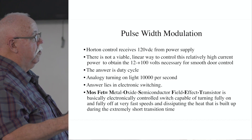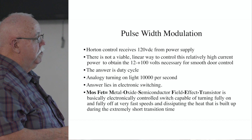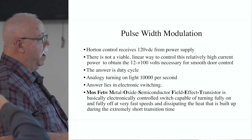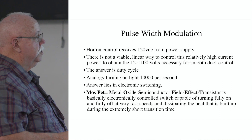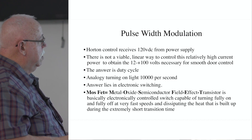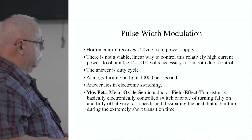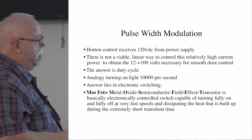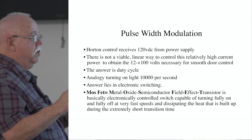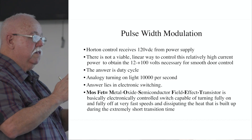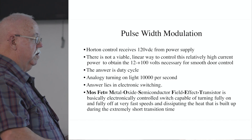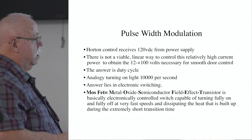There's not a viable linear way to control the high current — we're looking for like 12 to 100 volts. By the way, you can operate a 90-volt motor with a 12-volt battery, but you don't get near the torque that you get with pulse width modulation. So we're going to use an electronic switch, and the part that does that is called a MOSFET — a Metal Oxide Semiconductor Field Effect Transistor. It's basically an electronically controlled switch capable of going fully on and fully off at very fast speeds, and because it's off and on with such a brief transition time, not much heat builds up — though we still have to put a pretty good heat sink on them.